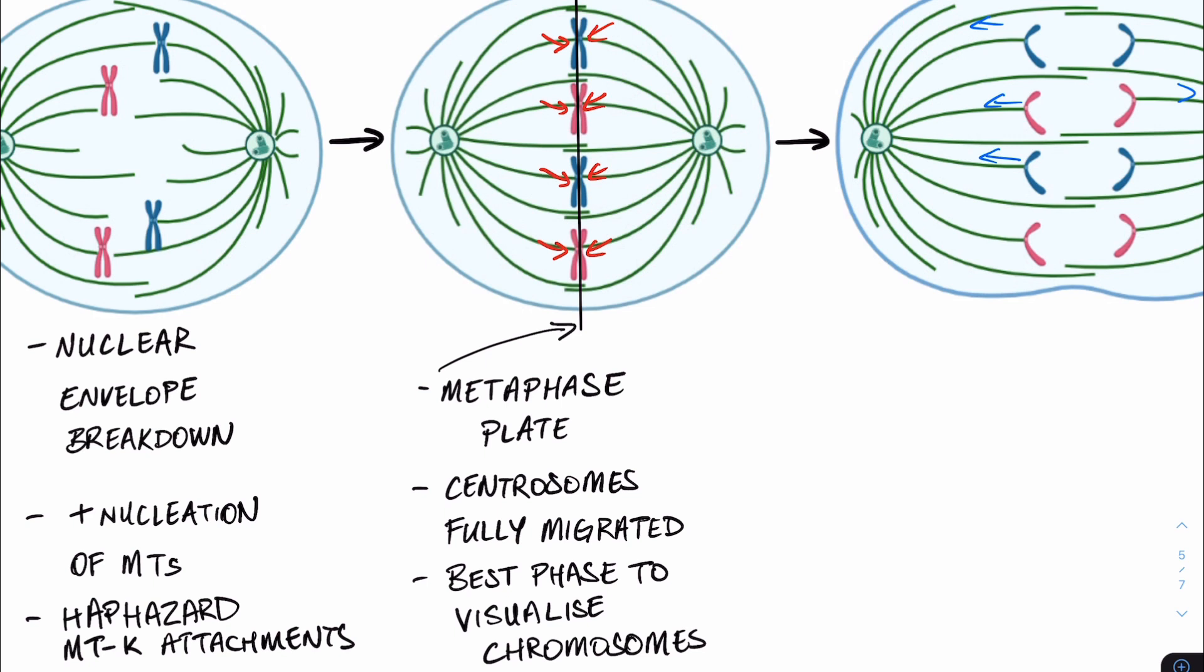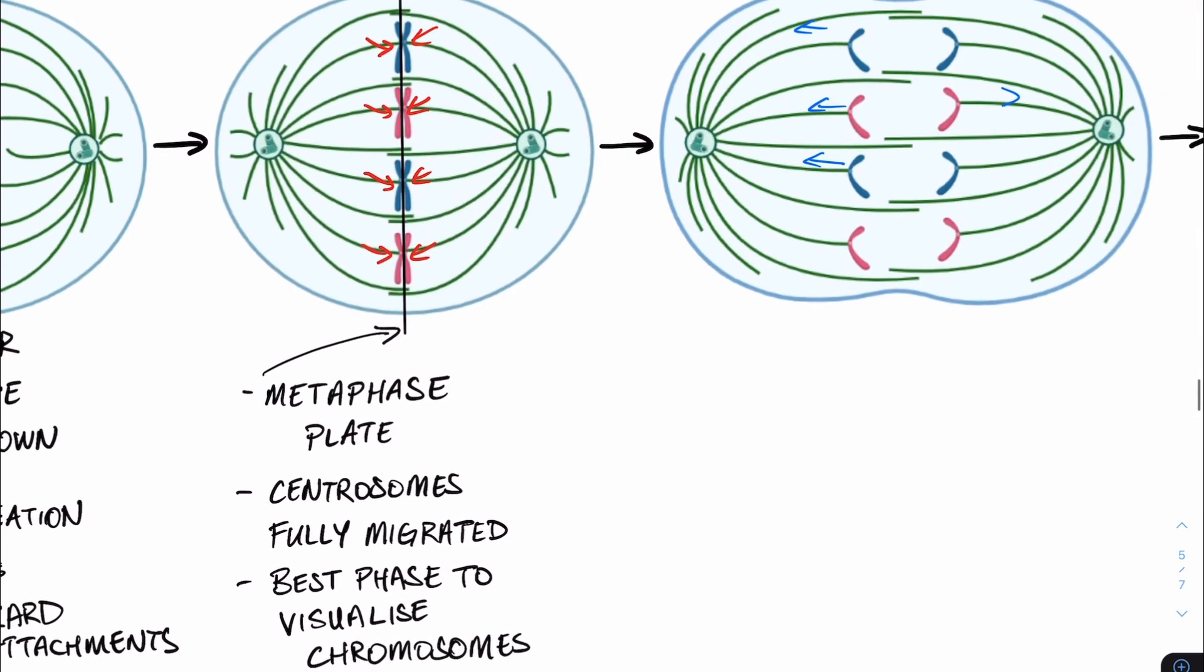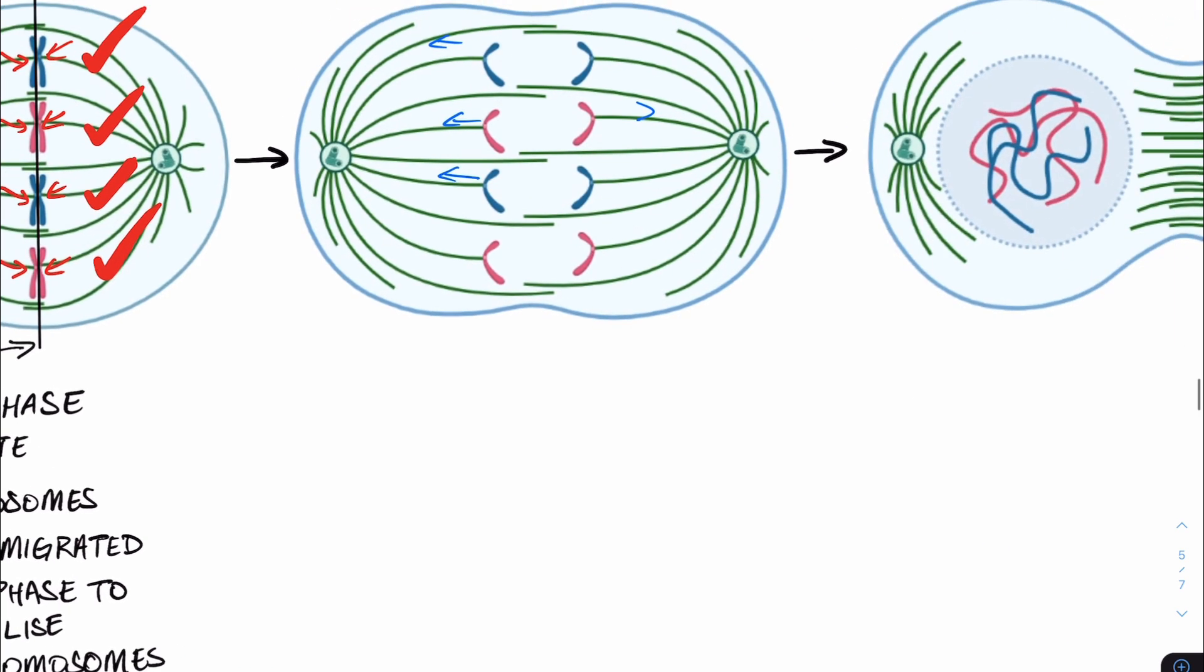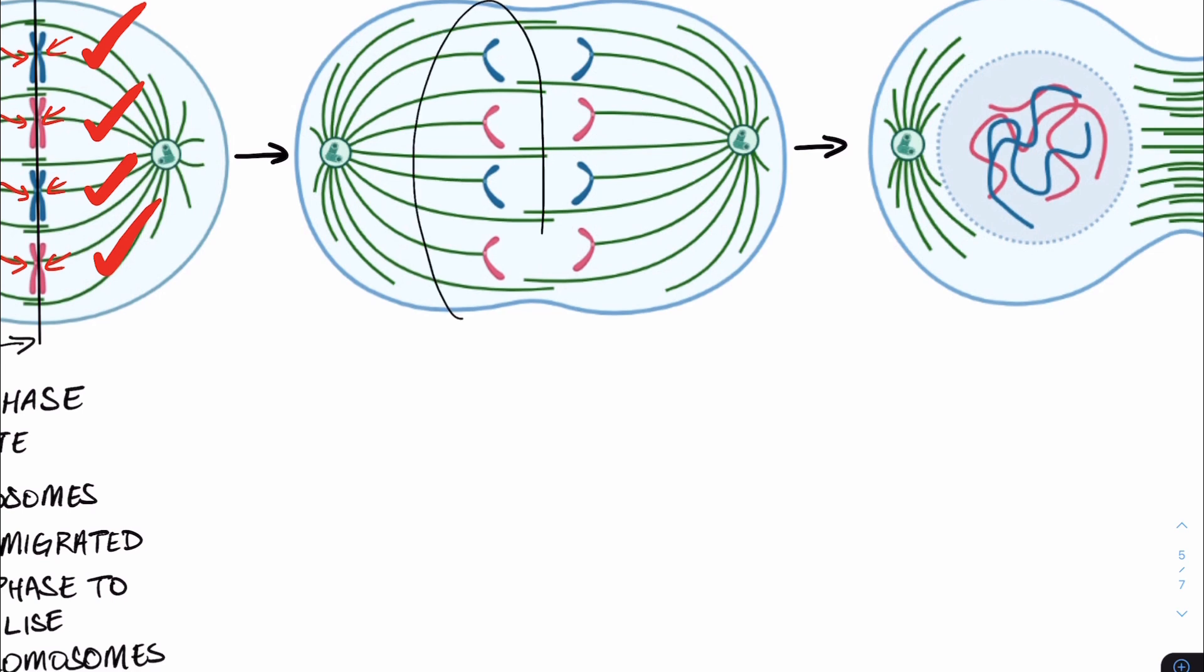Anaphase, the next phase, can only occur if the checkpoint within mitosis is fulfilled, the spindle assembly checkpoint. The spindle assembly checkpoint requires all microtubules to be stably attached to its respective kinetochore. If this is the case, then the spindle assembly checkpoint is fulfilled, and anaphase is allowed to occur. This is to ensure that there is equal division and segregation of the genetic material. Once the spindle assembly checkpoint is fulfilled, we move on to anaphase.